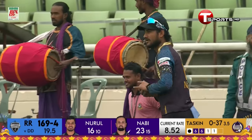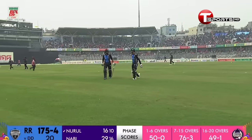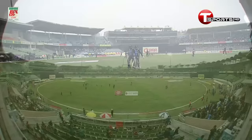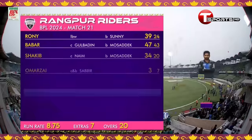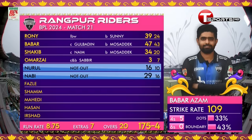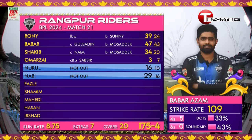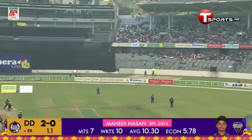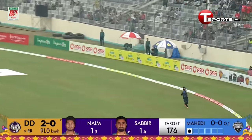Short ball — Mohammad Nabi goes hard, goes high, and gets a boundary. The fielder could have done better. It's been a very good comeback from Rangpur Riders, I must say. They were struggling at one point but Mohammad Nabi came in and scored a quick 29 off 16, with Nurul also scoring 16 off 10.